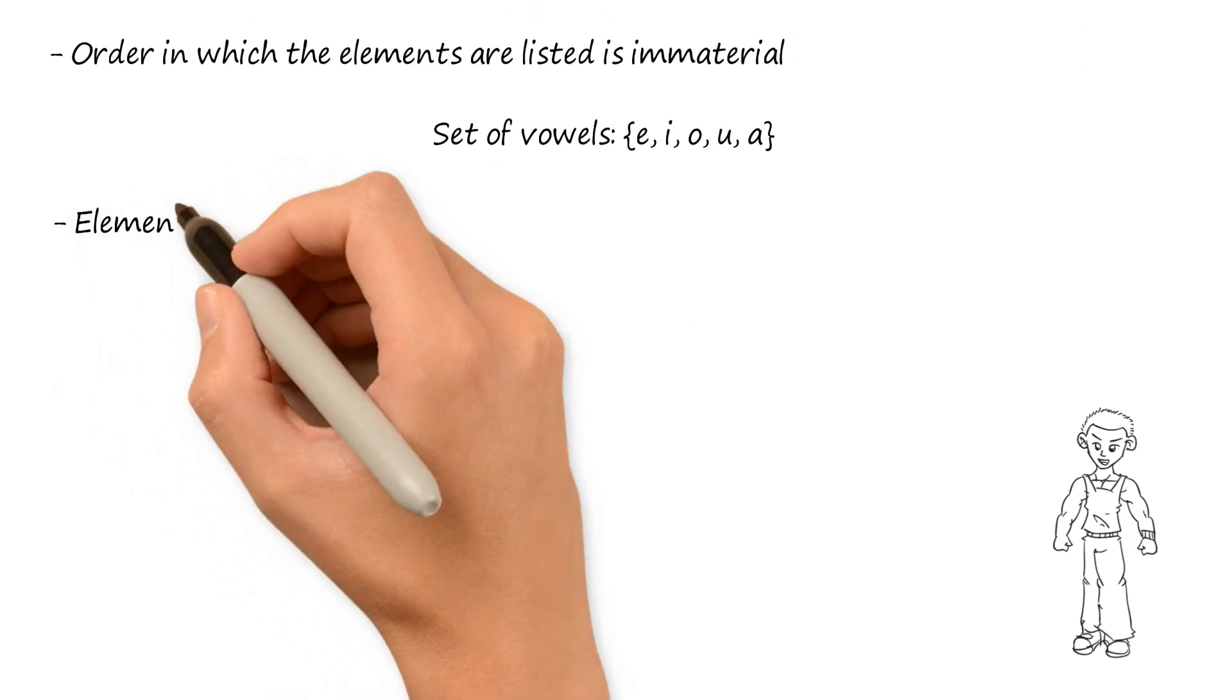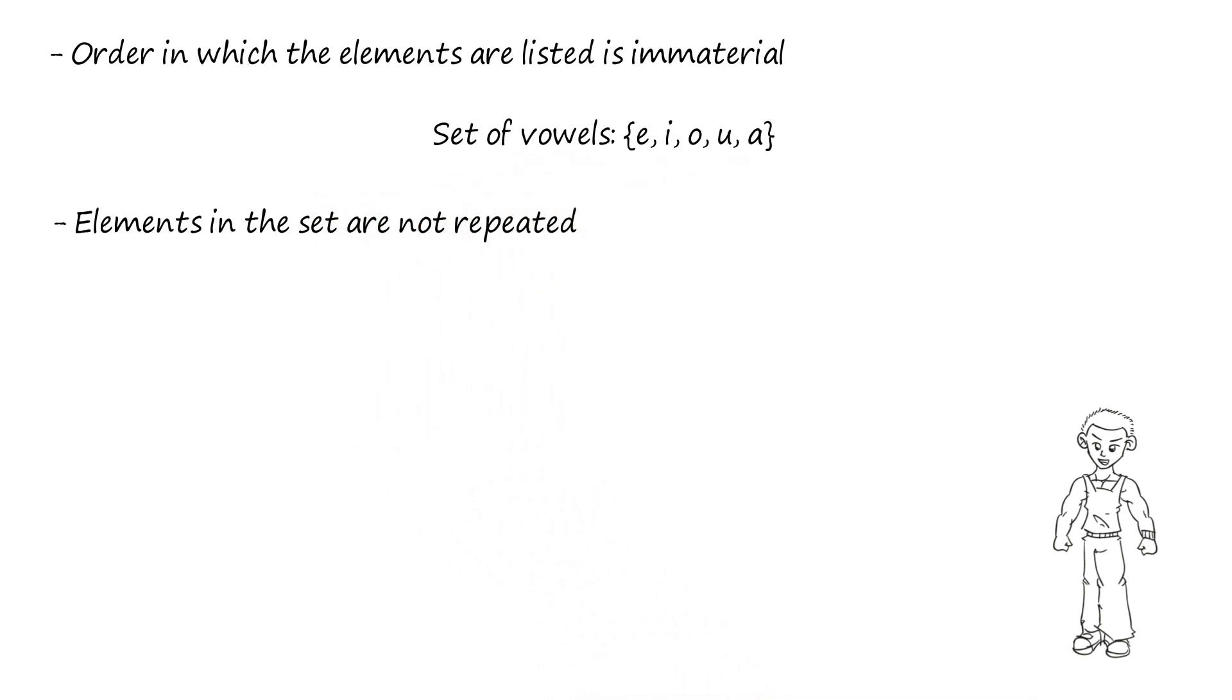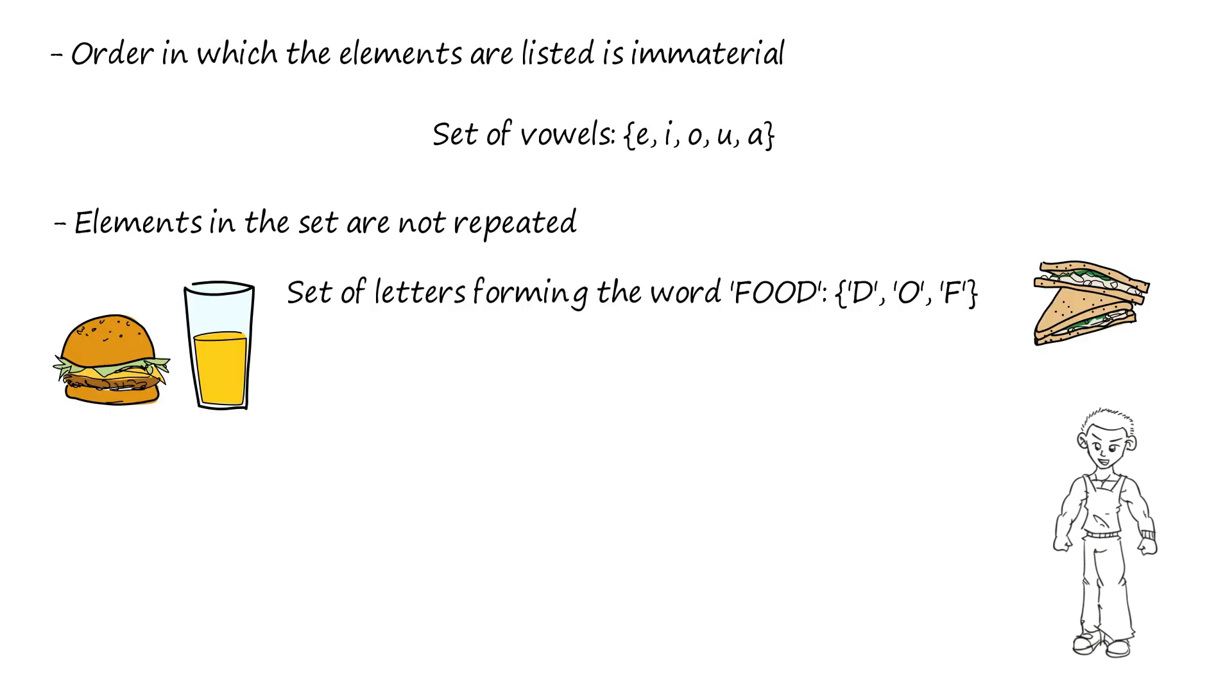Also, elements in the set are not repeated, that is, all the elements are taken as distinct. For example, set of letters forming the word food consists of only 3 letters: D, O and F.